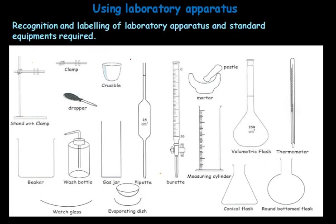To solve Paper 6, we should be able to recognize and label laboratory apparatus and some standard equipment. Here we can see some standard equipment and laboratory apparatus which we should know with diagrams and with their correct names — like burette, pipette, crucible, beaker.